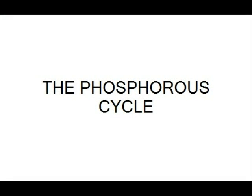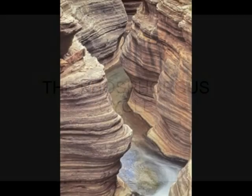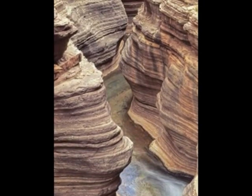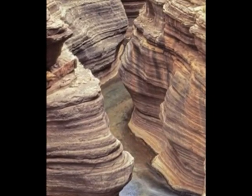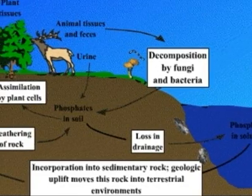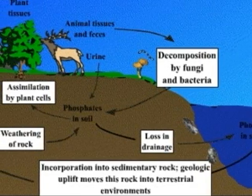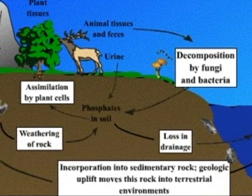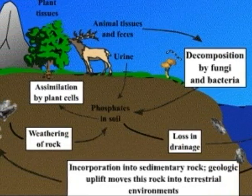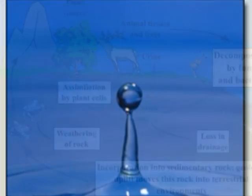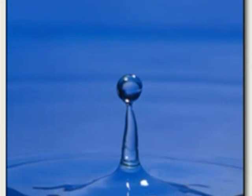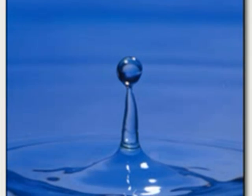The Phosphorus Cycle. The largest reservoir of phosphorus is in sedimentary rock, and the phosphorus cycle begins in these rocks. Through weathering, phosphates are removed from the rocks and deposited through the soil and water. Plants take up the phosphate ions from the soil.